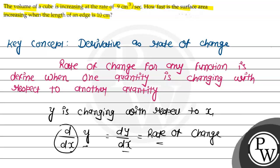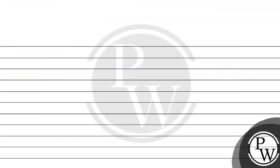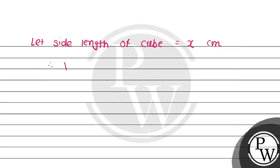Consider here the volume of the cube increasing at the rate given. So first we find the volume of the cube. Let the side length of the cube be equal to x. We have to use centimeters here. So the volume V will be x cubed cm cubed.